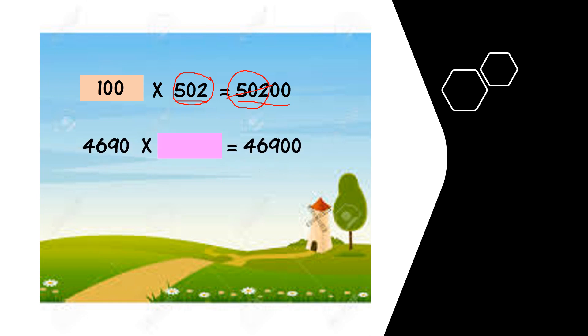Next one. We compare these two numbers. Bandingkan dua nombor. 4, 6, 9, 0. Kita ambil 4, 6, 9, 0. This one and this one. Sama kan? So tinggal 1 zero. Left 1 zero. So 10 or 100 or 1,000? 10, right?